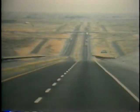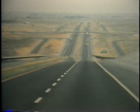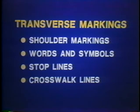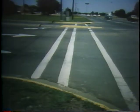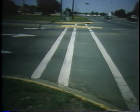White solid lines restrict crossing. Yellow solid lines prohibit crossing, and yellow lines also show the presence of opposing traffic. On freeways, the left edge line is yellow and the right edge is white. Shoulder markings, words and symbols on the pavement, stop lines, and crosswalks are transverse pavement markings. Transverse pavement markings such as stop bars and crosswalks must be much wider than longitudinal lines so that drivers can see them well enough from the driver's angle of viewing.